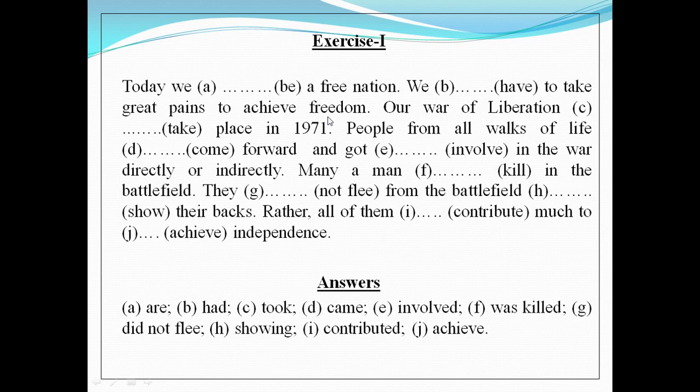'We ___ to take great pains to achieve freedom.' This sentence is referring to a past occurrence — our war of liberation. As it is referring to a past occurrence, this sentence is in past indefinite form. So our answer for gap B will be the past form of 'have,' which is 'had.'